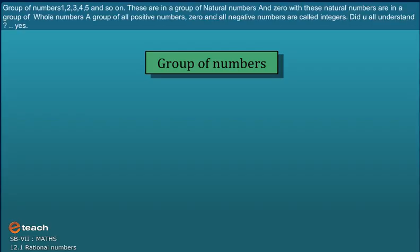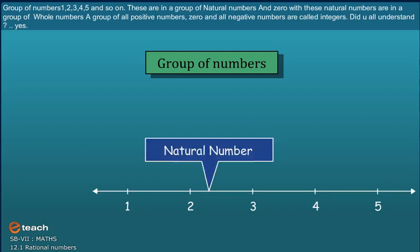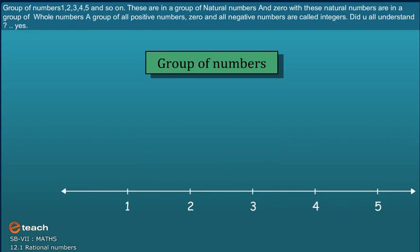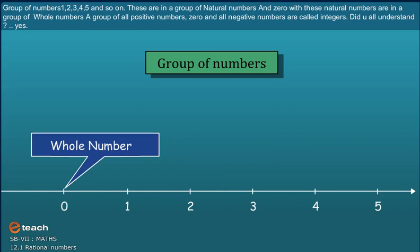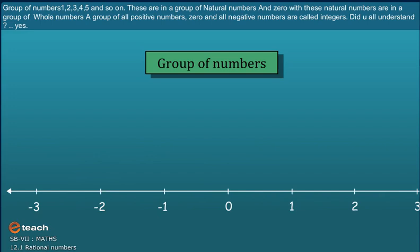Group of Numbers: 1, 2, 3, 4, 5 and so on. These are in a group of Natural Numbers and 0 with these Natural Numbers are in a group of Whole Numbers. A group of all positive numbers, 0 and all negative numbers are integers. Did you all understand? Yes!